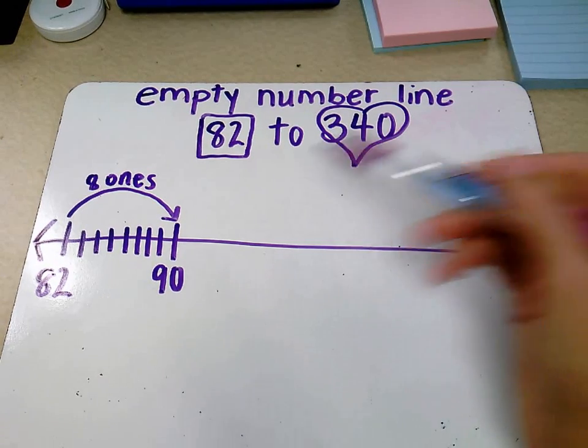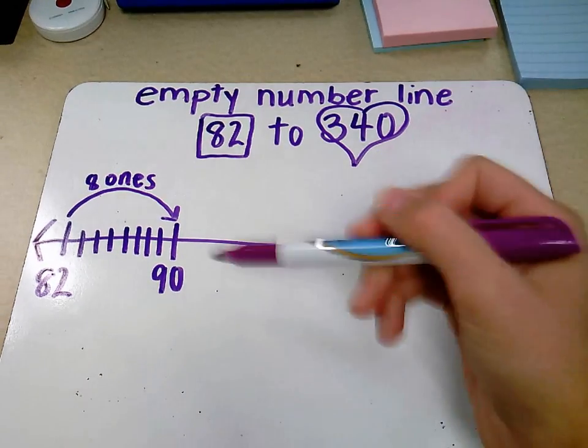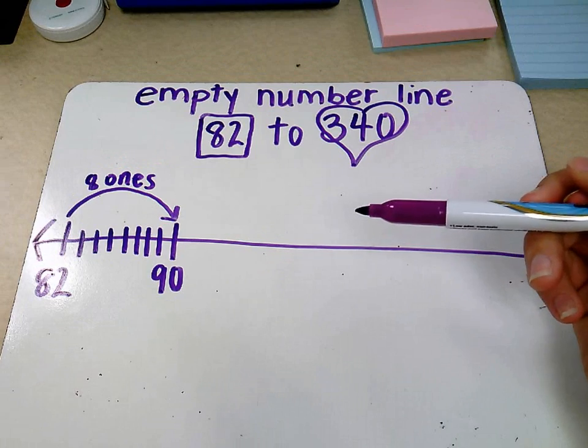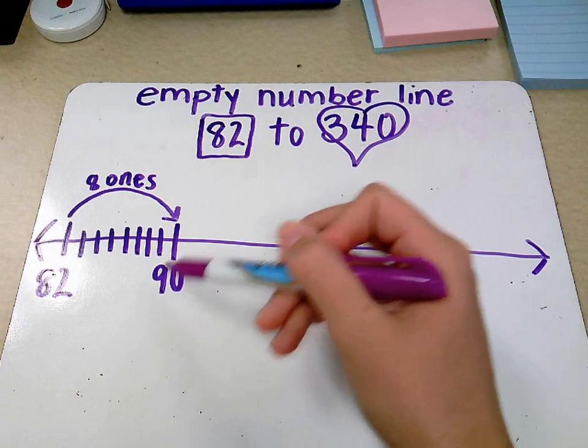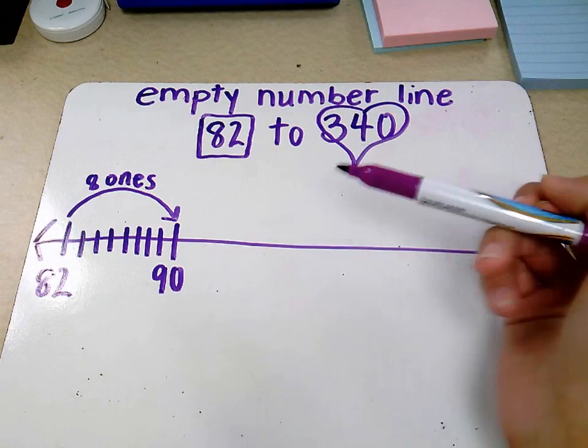But we're not done. We're not at our goal yet. Now what are we going to add by? Should we add by ones, tens, or hundreds? Well, we're at a benchmark number. That's a nice even number. Let's add by tens.